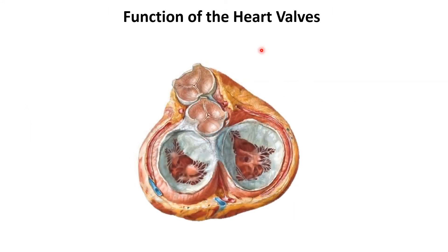This picture was taken during diastole. Here you can see that the AV valves are open but the semilunar valves are snapped shut. When the semilunar valves are closed they produce a sound called S2. I'm going to play the heart sounds for you and you're going to be able to see what the valves look like during an actual heartbeat.